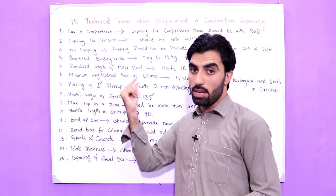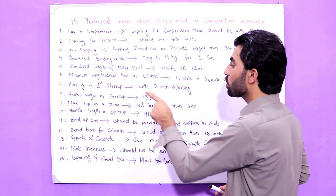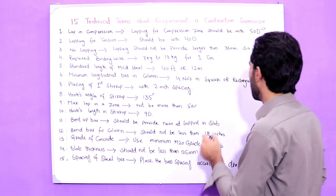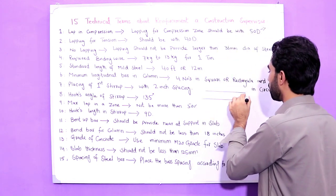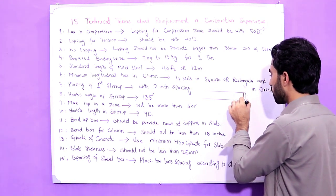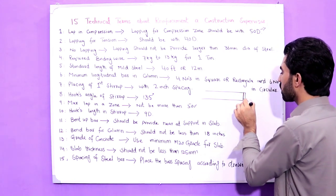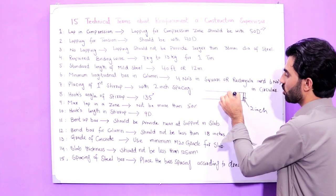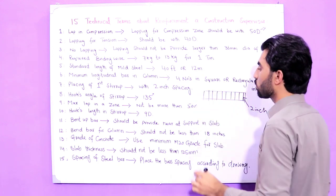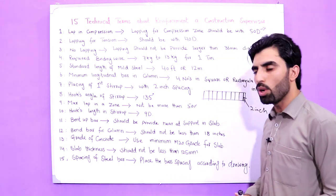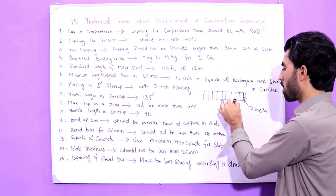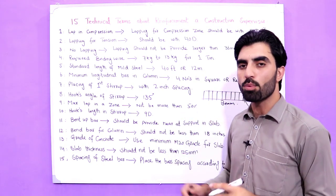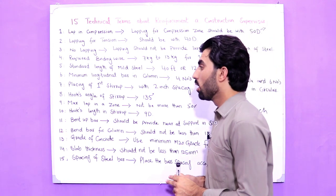The seventh term is placement of the first stirrup in a beam. The first stirrup should be placed at a spacing of two inches. As you can see in this beam diagram, the first stirrup is provided at two inches, and after that the spacing depends on your structure design — six inches, seven inches, or as specified.